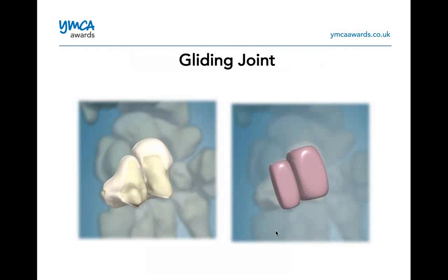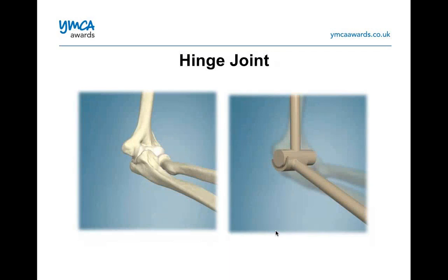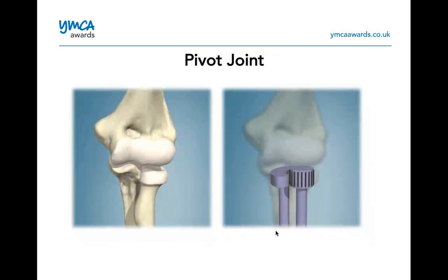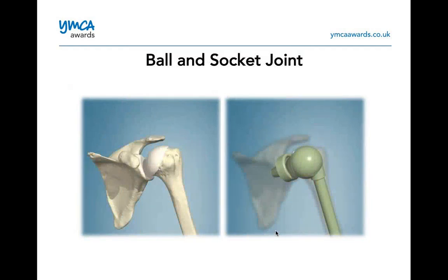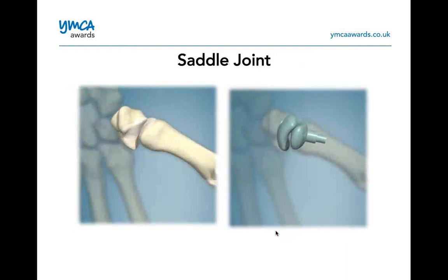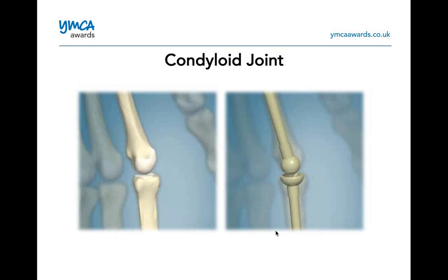There are different types of synovial joints. A gliding joint can be found in the hand. A hinge joint can be found at the elbow or knee. A pivot joint can be found in the wrist. There's the ball-and-socket joint, found in the hip — and in that diagram it's showing the shoulder. And then a saddle joint, which is found in the thumb — we also have one in our jaw.